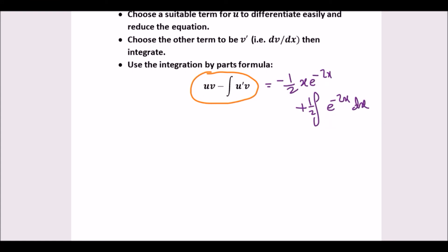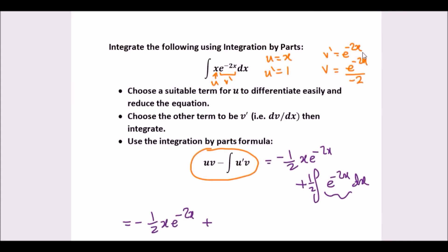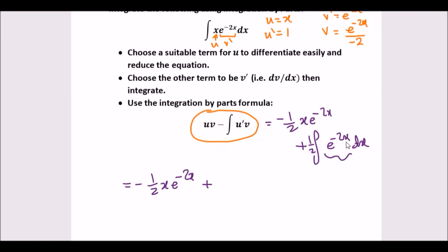Just integrating this last term and we're done. Rewriting it properly, we get minus one half x e to the negative 2x, plus now integrating the remaining term, which is exactly the same as before — e to the negative 2x over negative 2 — so repeating that gives us negative one quarter. So this becomes minus 1 over 4 e to the negative 2x, and that's it, plus C.